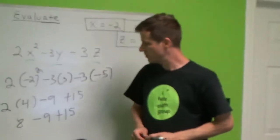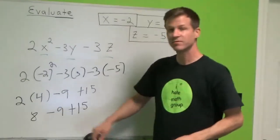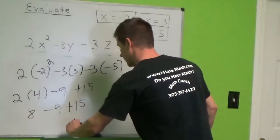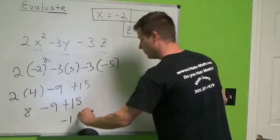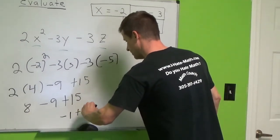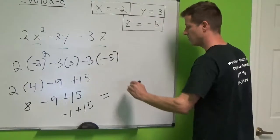Combine the like terms, which are the numbers. 8 and negative 9 gives us negative 1. Now, plus 15. That's going to be equal to 14.